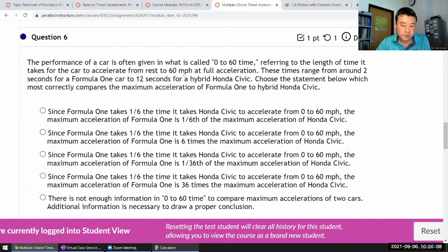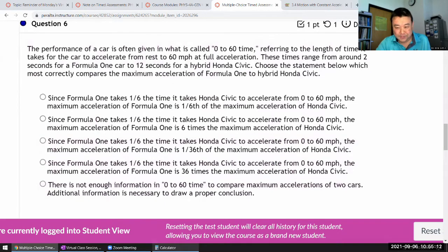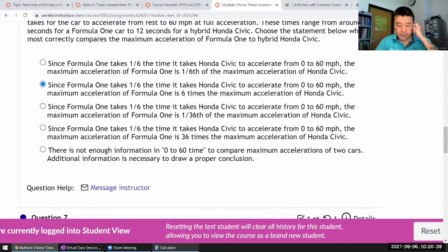Performance of cars, I mean, that's a long question. There's the thing below which most correctly compares the maximum acceleration formula one to higher. Okay. So the times, okay. There are different by-factor of six. So which means acceleration of formula one car will be six times greater. So yeah, six, one-sixth time, the maximum acceleration, six times the maximum. Yeah, I feel like this is more of a reading question. Like how quickly can you read?